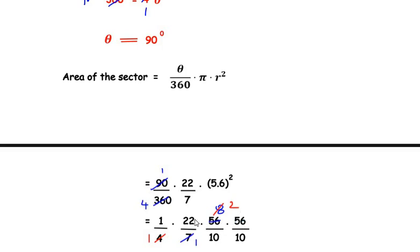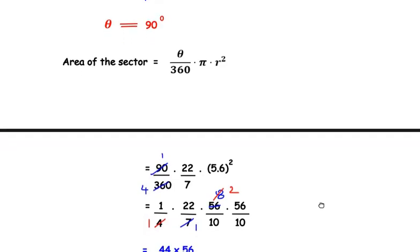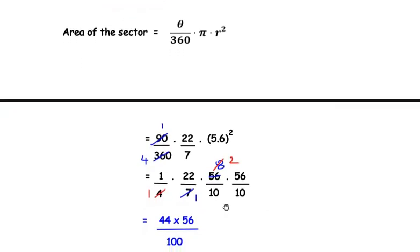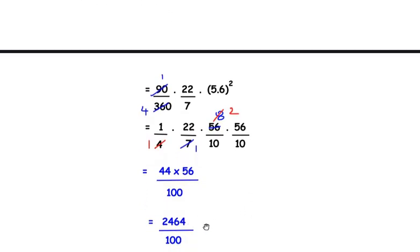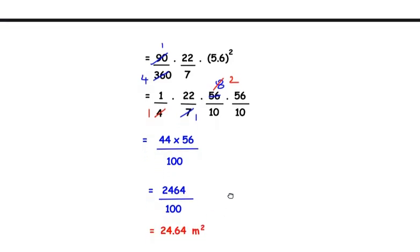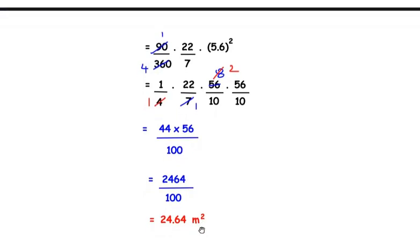Here let us keep the 10 and 10 in the denominator the same because it becomes easy for us to solve it further. So now I'm going to multiply 22 with 2, so we have 44 × 56 over 10 × 10, which becomes 100. Now 44 × 56 will give us a value of 2464 divided by 100. Since it is divided by 100, we can write it in decimal form as 24.64 meters squared. So this is the area of the sector given.